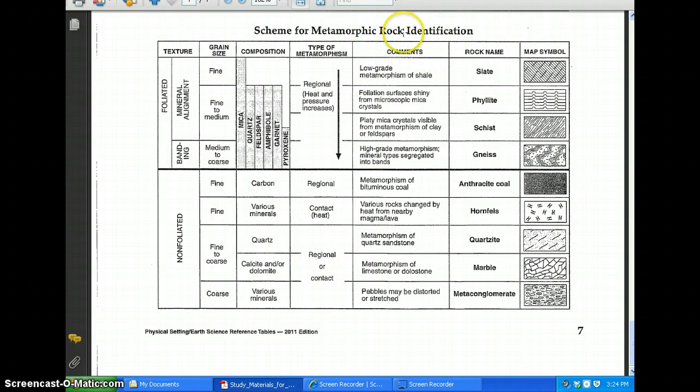In the comments column, this will explain various characteristics about your rock or it will tell you what parent rock it formed from. For instance, slate forms from the metamorphism of shale. Quartzite forms from the metamorphism of quartz sandstone.